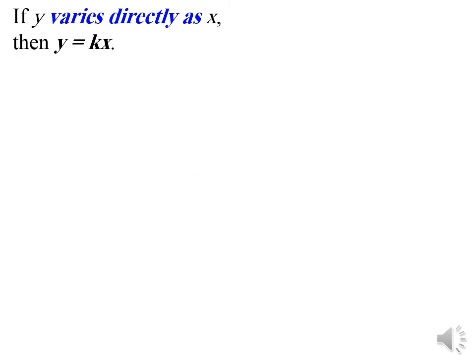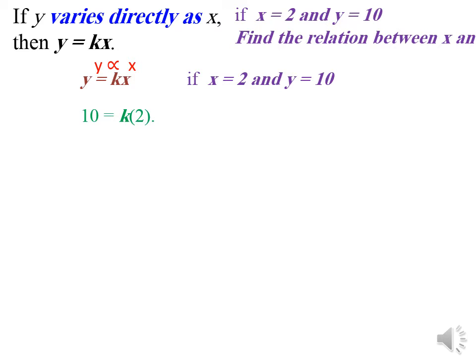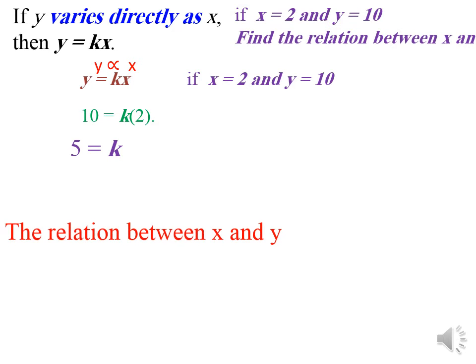If y varies directly as x, then y equals k times x. If x equals 2 when y equals 10, I can replace x with 2 and y with 10. Finally, k equals 10 divided by 2 equals 5. So the relation will be y equals 5x.